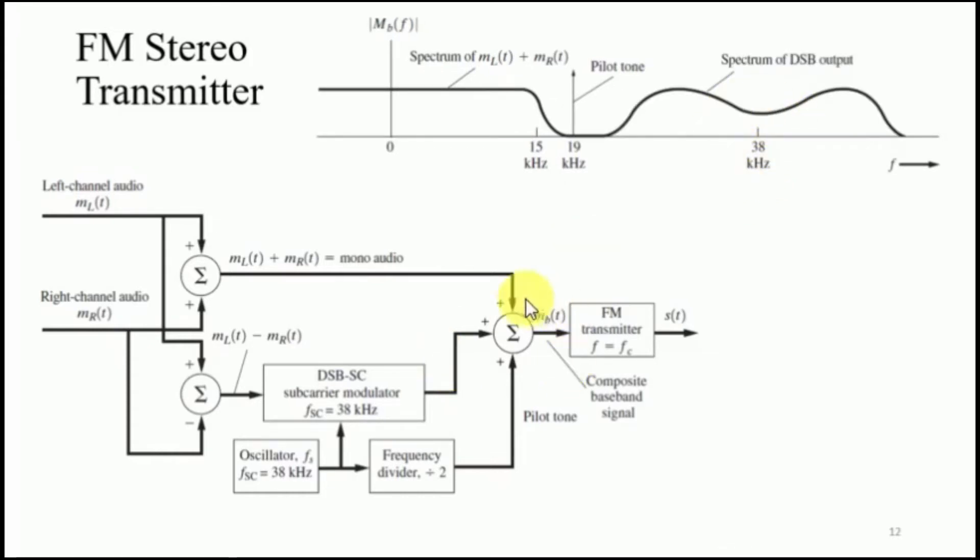The composite signal MB of T or in spectrum MB of F is then passed through an FM transmitter and transmitted over the air.